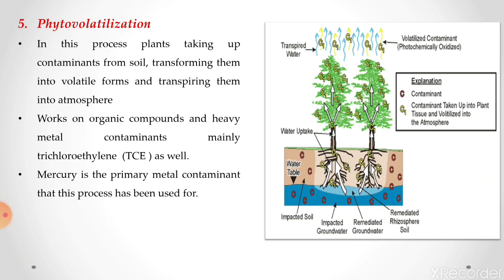In phytovolatilization, the plant takes up contaminants from soil, transforms them into volatile form, and transpires them into the atmosphere. It works on organic compounds and heavy metal contaminants, mainly trichloroethylene and mercury. The plant leaves and stalks play a major role — whatever contaminants are absorbed by the plant are transformed into volatile form and evaporated through the plant leaves.